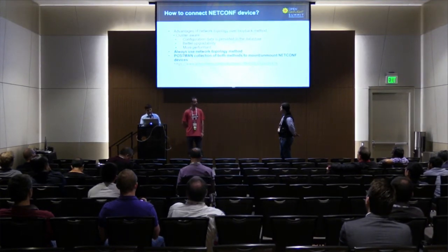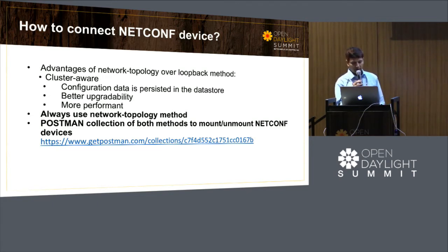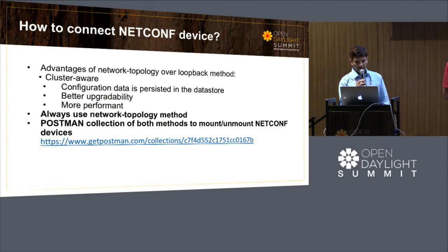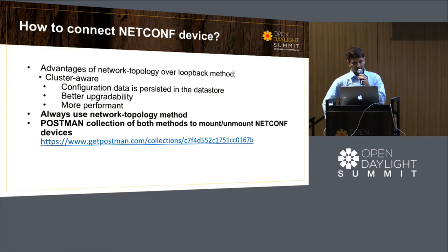The bottom line on the advantages of network topology over the loopback: please do not use the loopback method. It's kind of deprecated and it's not going to help in any way going forward. Please use the network topology way. It's cluster-aware, and the configuration data is persisted in the data store, so you don't need to worry about the configuration XML files anymore. It's also much easier to upgrade using the new method because nothing will go to the controller context XML file — everything is in the data store.